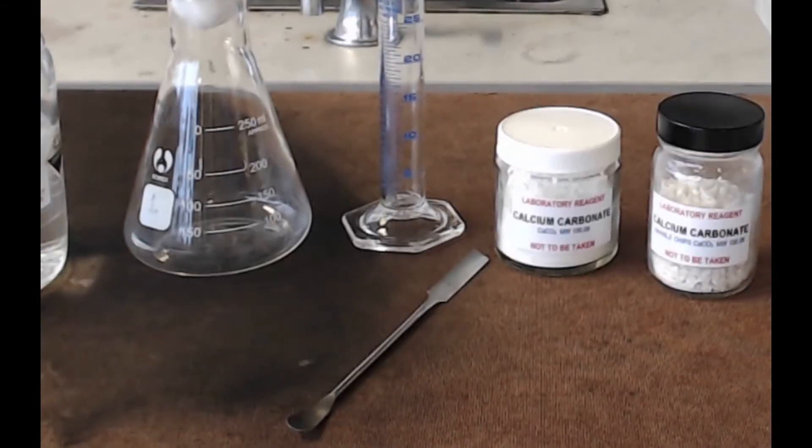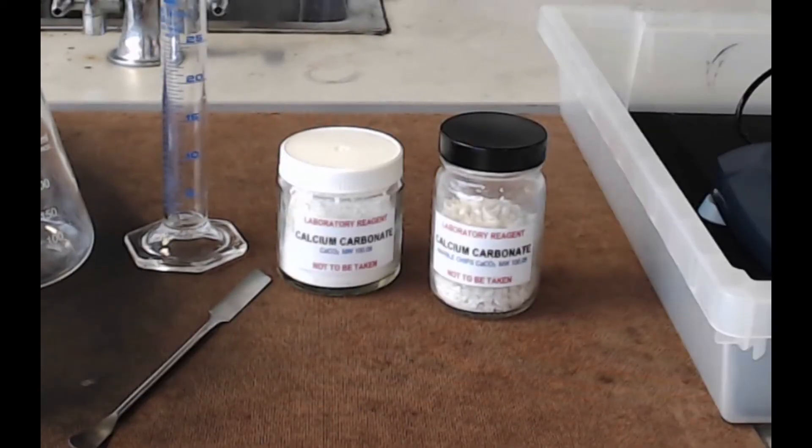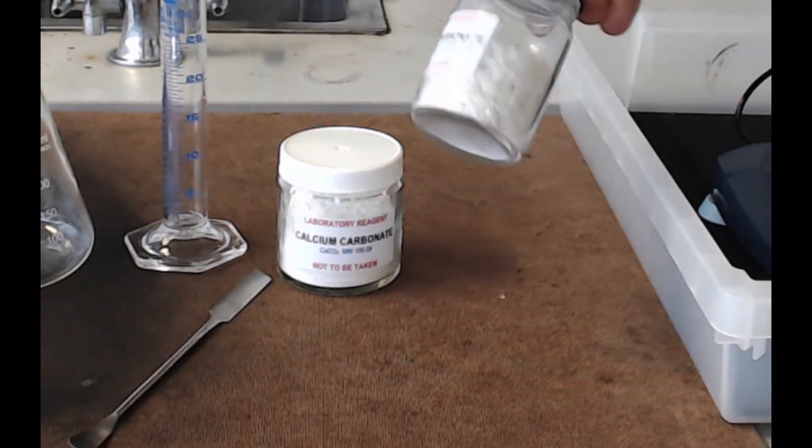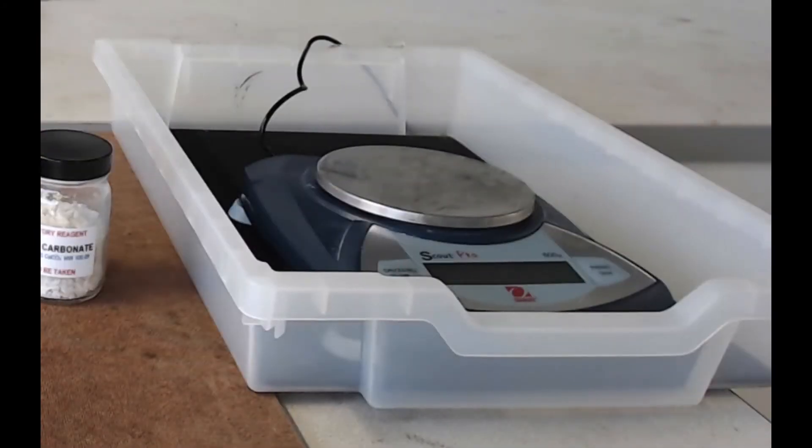You'll need a spatula for dispensing your calcium carbonate, two forms of calcium carbonate - a powdered form and another form called marble chips, which are like small stones - and a balance to weigh out your calcium carbonate.